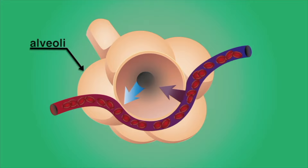At the same time, the partial pressure of carbon dioxide, or PCO2, in the blood is greater than that in the lungs. As a result, carbon dioxide diffuses out of red blood cells and into the alveolar air, where it is exhaled.